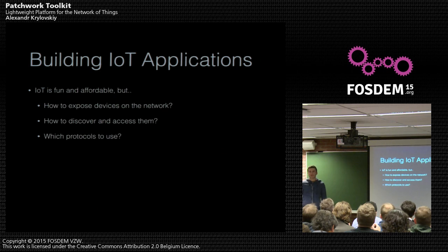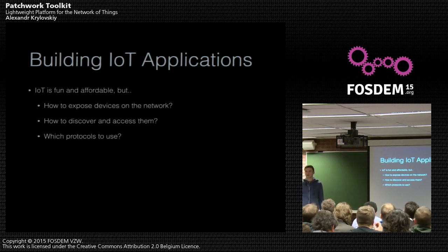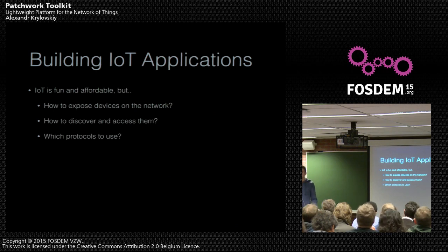IoT today is quite affordable. For around 100 euros, you can get the Raspberry Pi and a bunch of DIY electronics and assemble it together — it's quite easy. The problem is then you want to build your application. How do you communicate with your devices once you have connected them? How do you discover them? How do you communicate with them? Which protocols do you use?